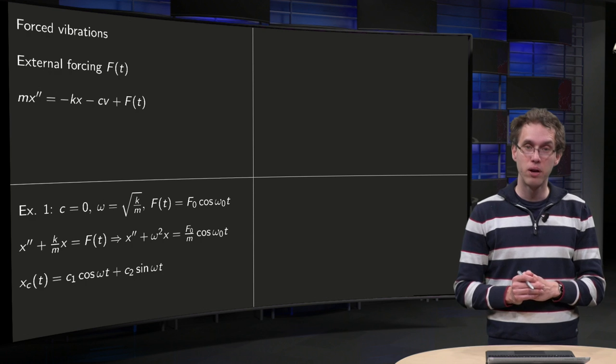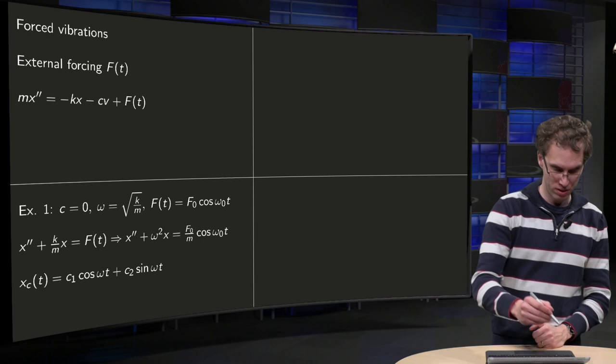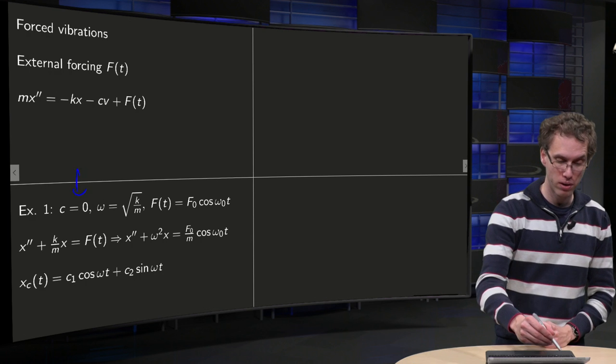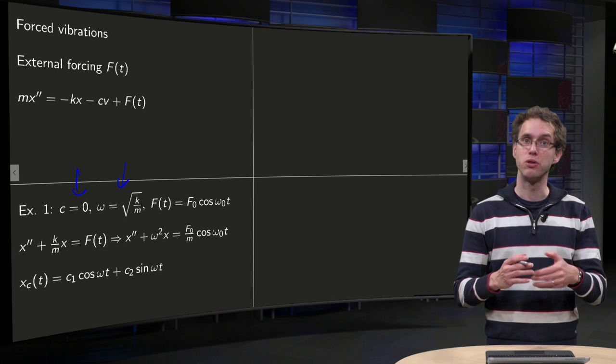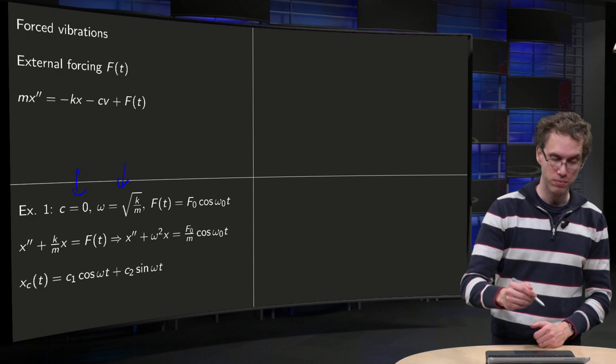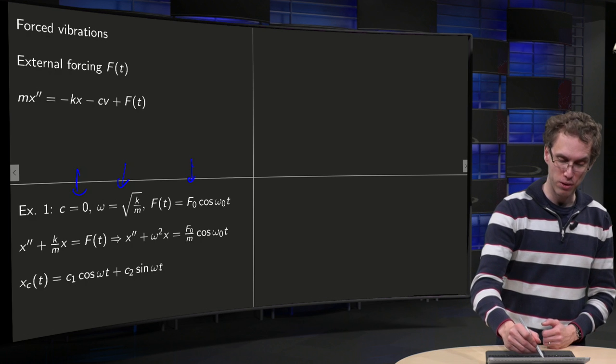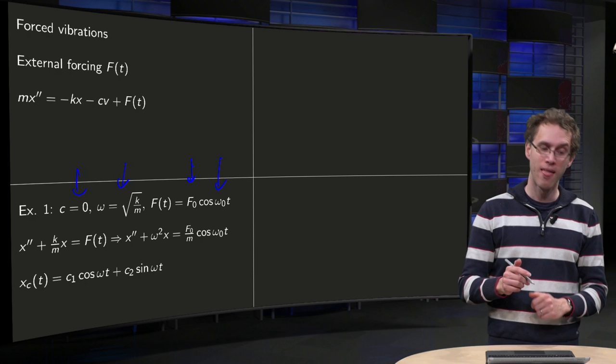Now, we'll do an example where we will set the friction to zero. So we set c to zero, we define again our familiar omega as square root of k over m, and we will introduce a periodic forcing. F(t) has some amplitude F0 and a cosine omega_0 times t, where F0 and omega_0 are constants.